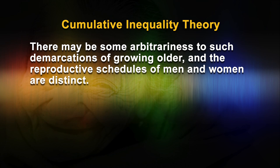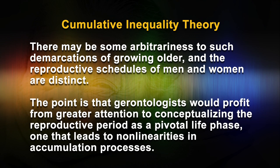Puberty is widely accepted as a key biological step in the transition to adulthood, and reproduction is a marker for adulthood in many societies. When we think of aging as a life stage of growing older, we are probably referring to the post-reproductive stage of life. There may be some arbitrariness to such demarcations, and the reproductive schedules of men and women are distinct. Gerontologists would profit from greater attention to conceptualizing the reproductive period as a pivotal life phase, one that leads to non-linearities in the accumulation process.